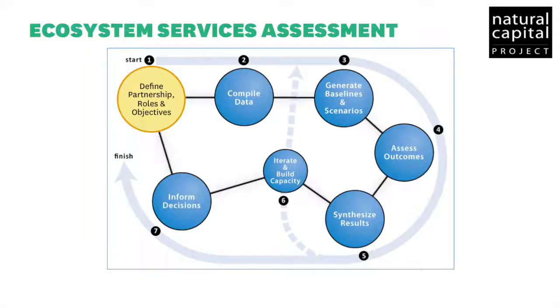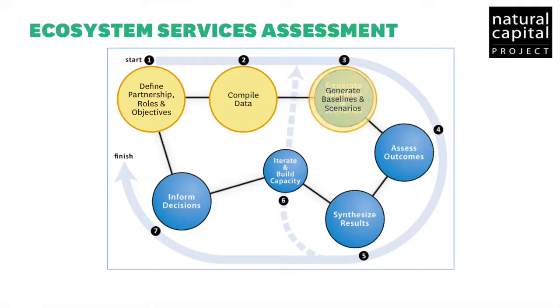Our experience has shown that InVEST studies are most effective when they're part of an iterative science-policy process. This process includes common elements seen across our applications. First, it's important to scope out the problem to define partnerships and goals. Next, compile data on ecosystem services of interest. Then develop a baseline understanding of ecosystem services on the current landscape and develop scenarios of policy or land management changes that could happen in the future.